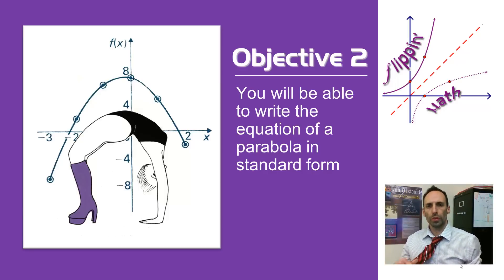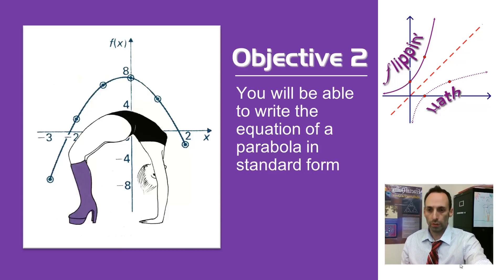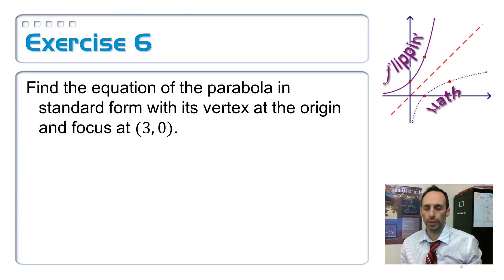All right, so let's practice a little bit more with objective 2, being able to write an equation of a parabola in standard form. Remember, we've got two different kinds, one with a vertical directrix, one with a horizontal directrix. Which ones which are all so confusing? I got an idea. We could always use that awesome and spectacular flowchart. There we go. So, exercise 6 here.